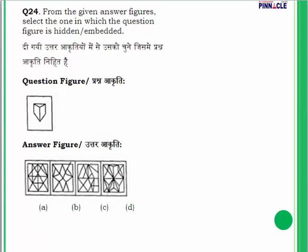Question number 24: embedded figure question. We have to tell in which option the question figure is embedded. If you see option D, the same figure is present both in the lower and upper portions of that option. Option D is the correct answer.